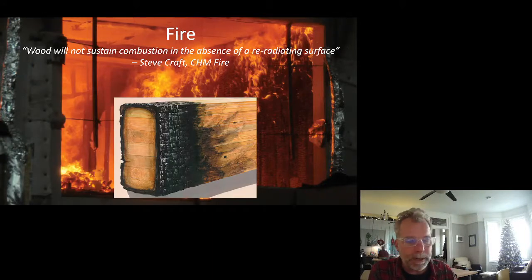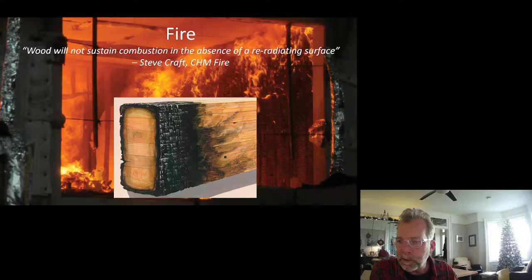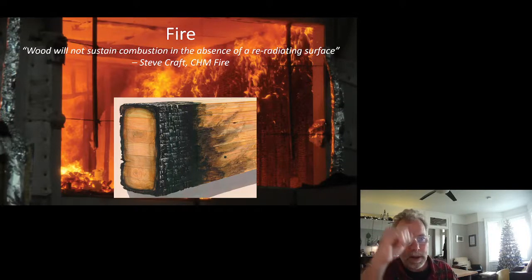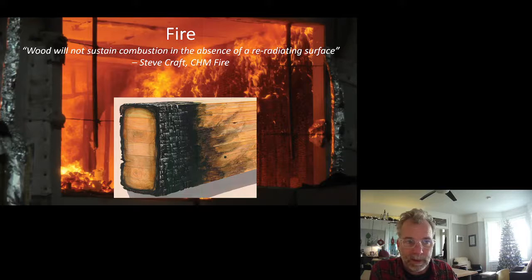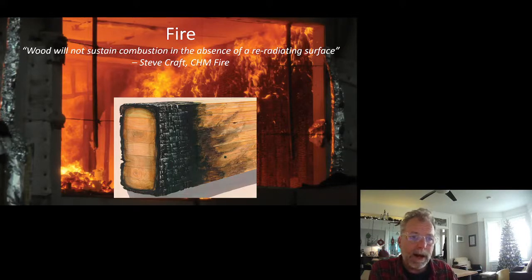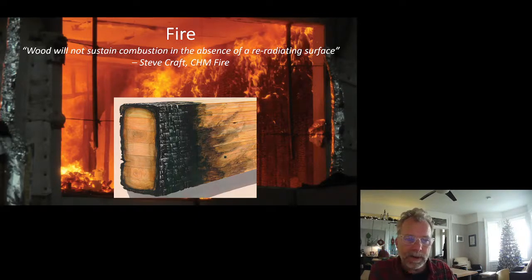What happens when wood is burning is it forms a layer of char all the way around the outside. That char acts as an insulator and protects the core. The char has no structural integrity, so to be sure the beam is getting weaker. But we know the rate of penetration of char in a design fire — it's about 41 millimeters per hour.